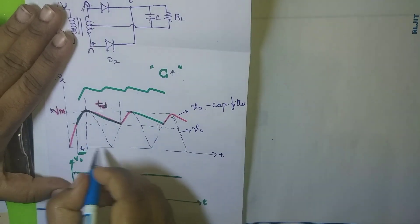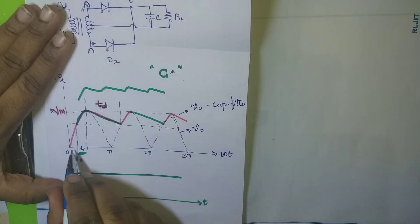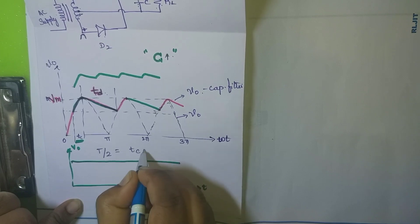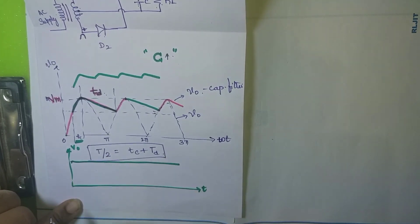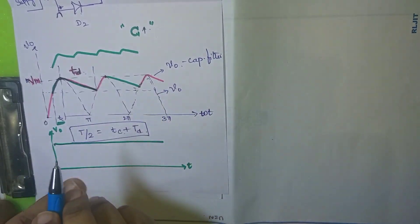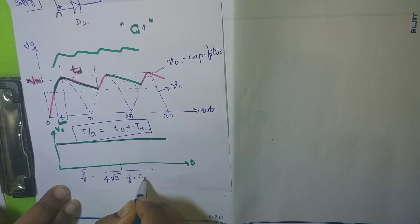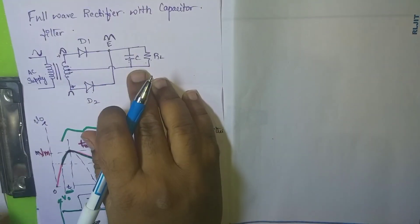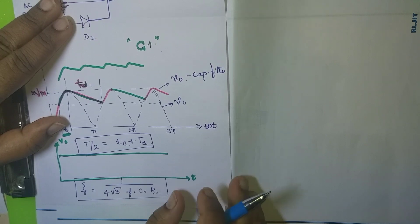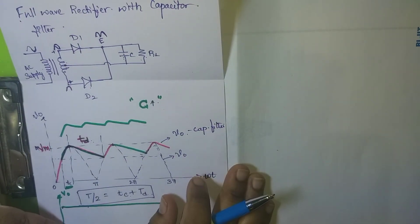The relation between TC, TD, and the time period T: since 0 to 2pi represents one complete cycle, T/2 equals TC plus TD. To find the ripple factor when using a capacitor filter, the expression is: ripple factor equals 1 divided by (4 times root 3 times f times C times RL), where C is the capacitance, RL is the load resistance, and f is the frequency. Increasing capacitance reduces the ripple factor, giving a smoother DC output. This concludes the topic of full wave rectifier.